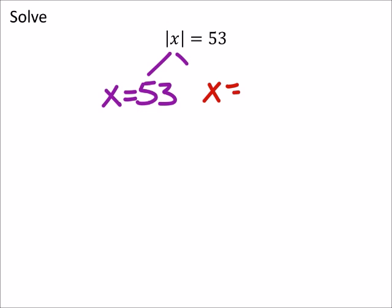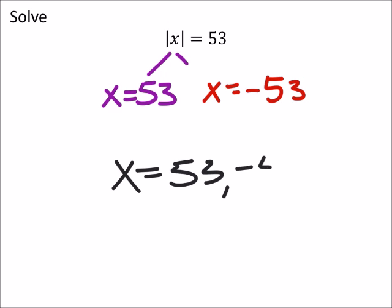But I also consider the negative here. Because the absolute value of a negative 53 is still 53 units from zero. So we have two answers on this. x equals 53 and a negative 53.